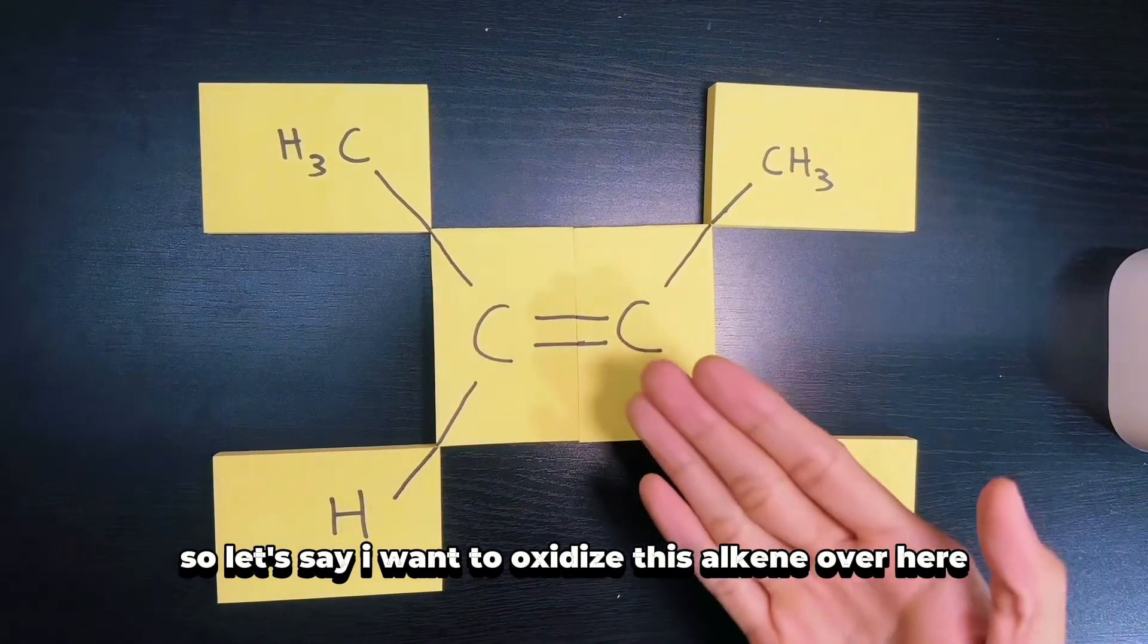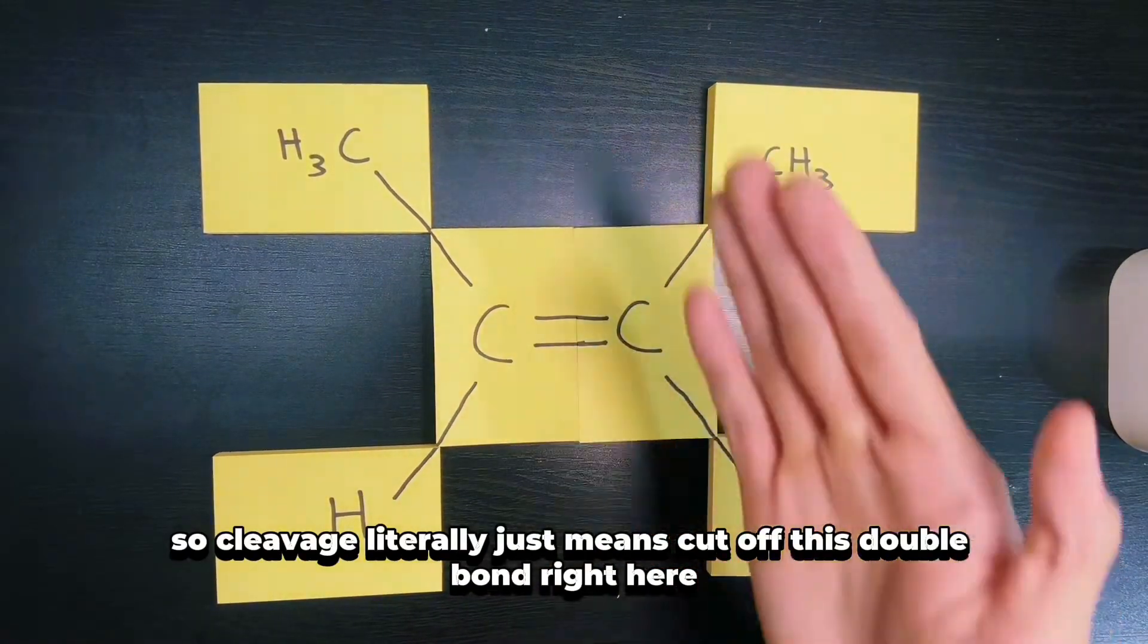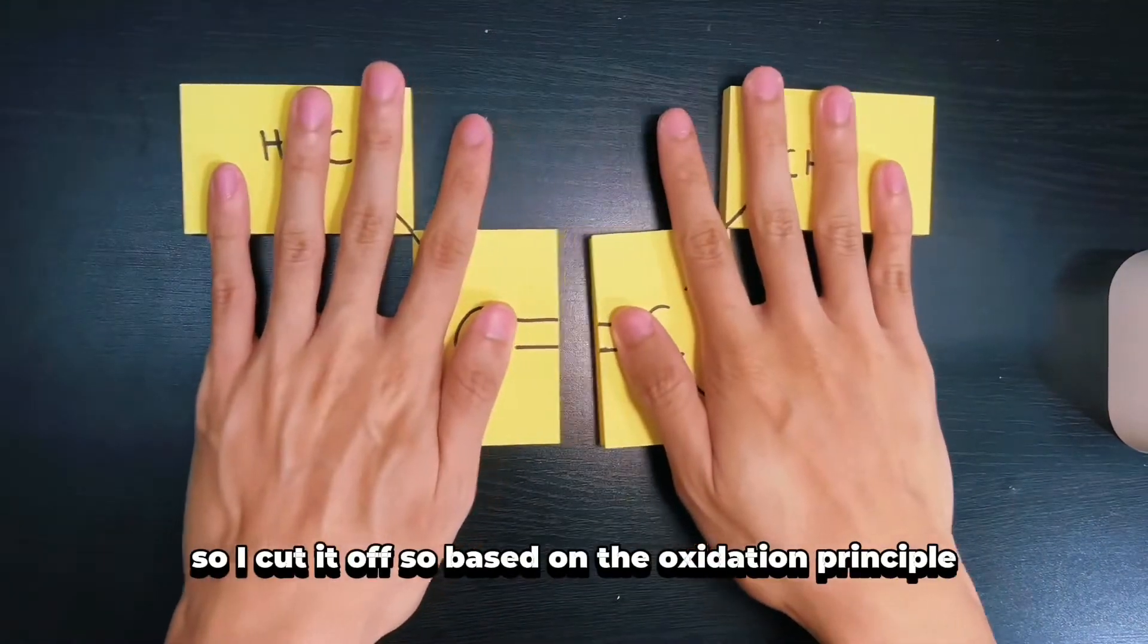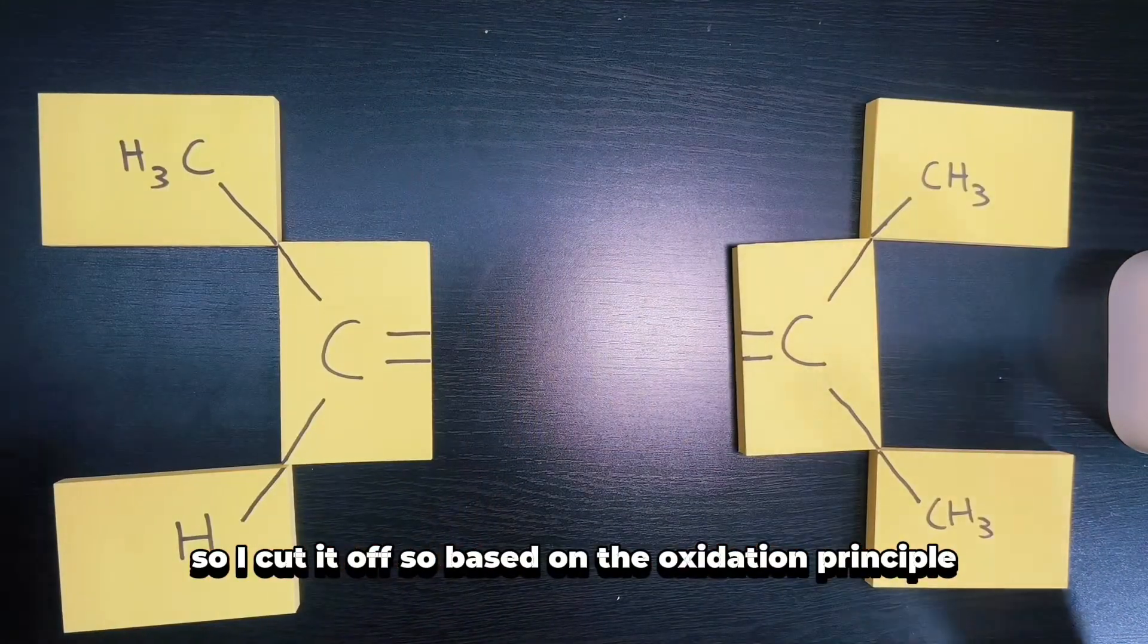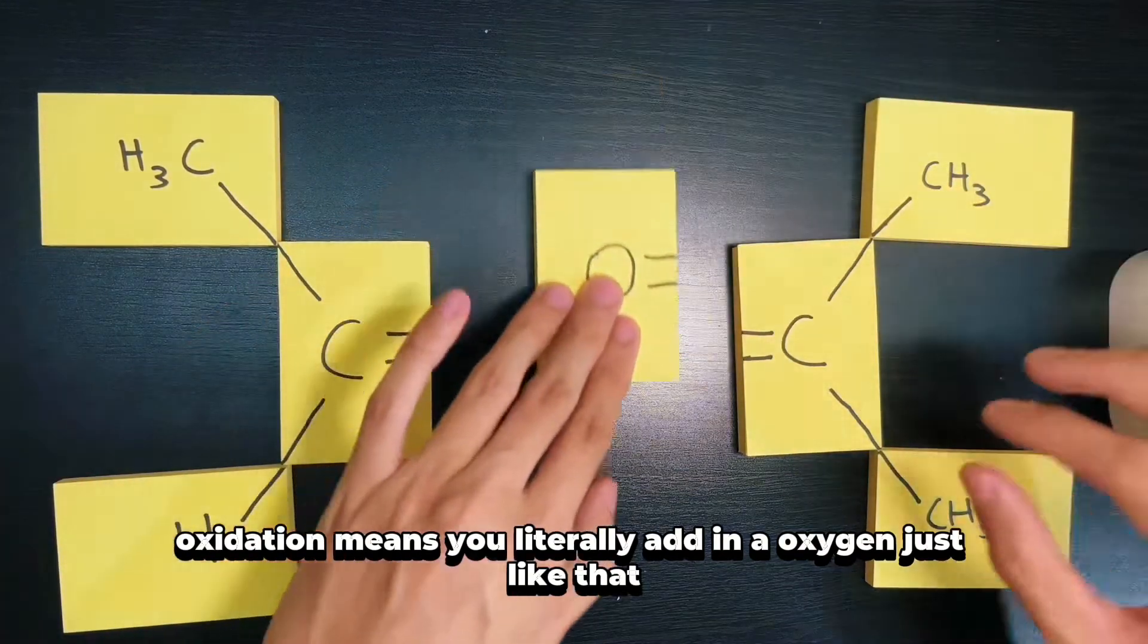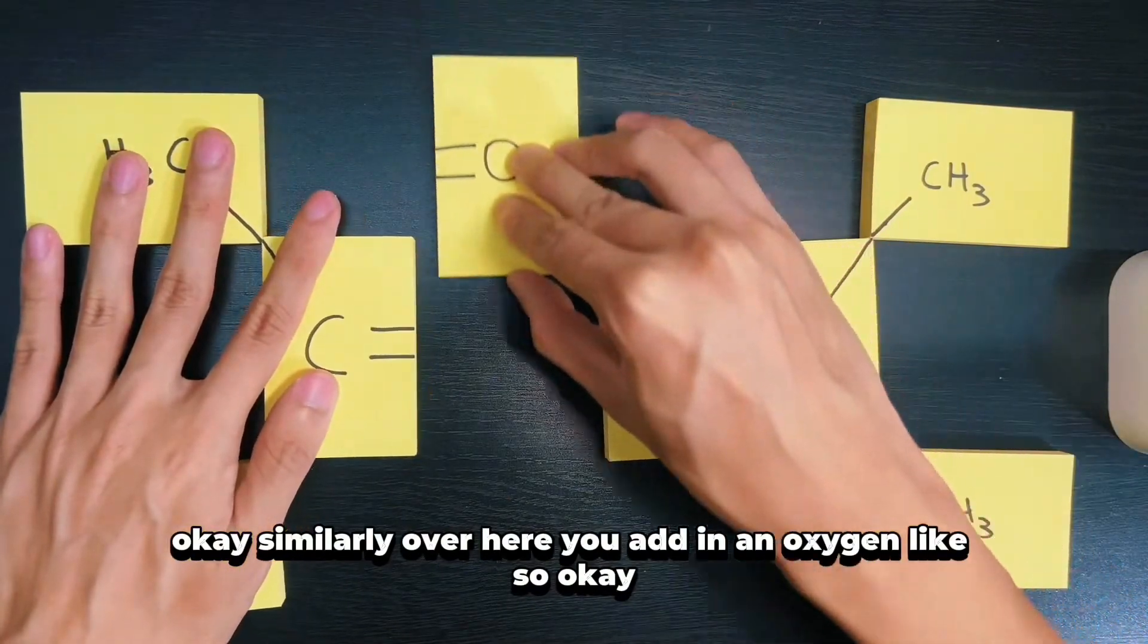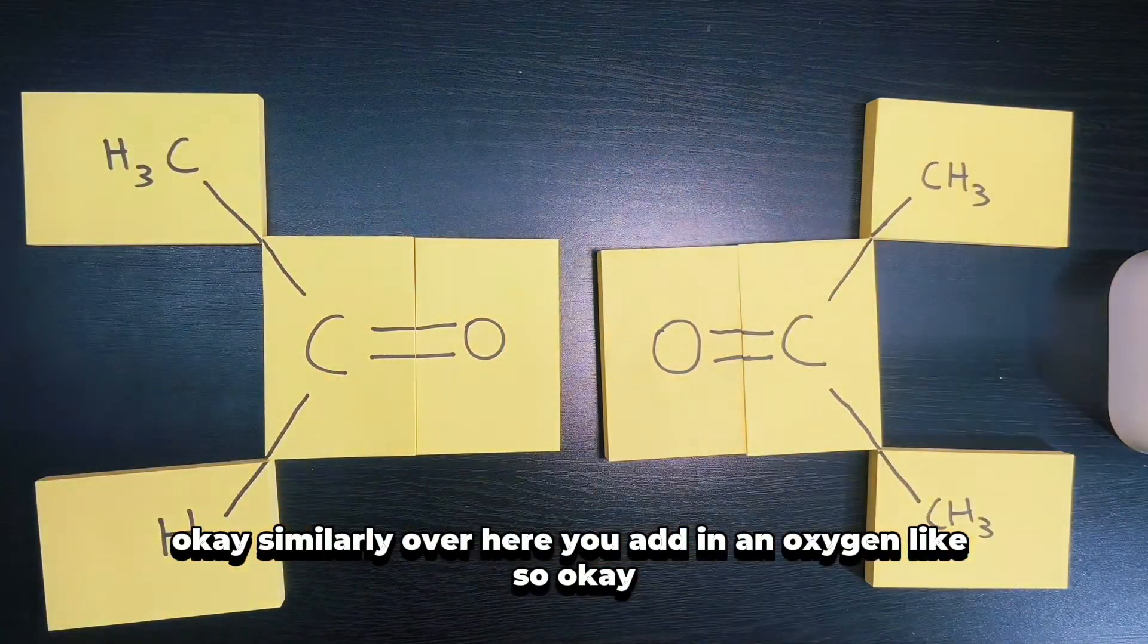Let's say I want to oxidize this alkyne by oxidative cleavage. Cleavage literally just means cut off this double bond right here. Based on the oxidation principle, oxidation means you literally add in oxygen just like that.